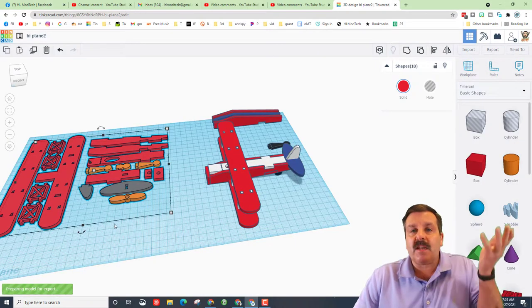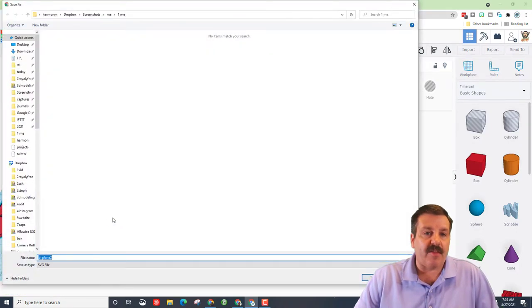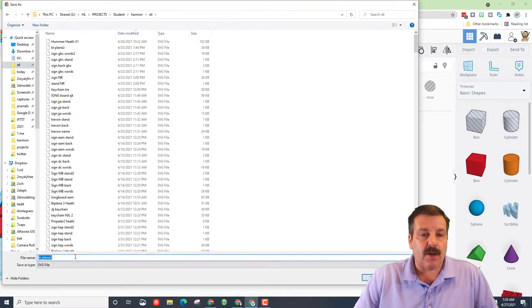Once again, I'm going to give you this SVG on Thingiverse. You'll be able to look in the description to find that. And now let's go over and cut biplane 2, and I'm going to call this V2 because I did make a couple adjustments.